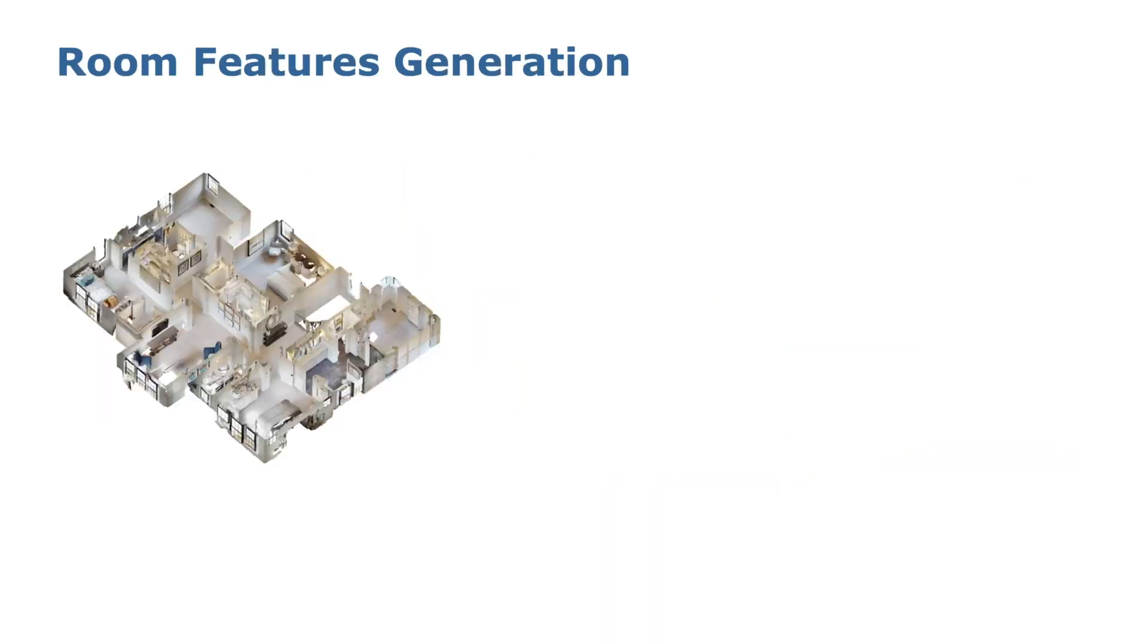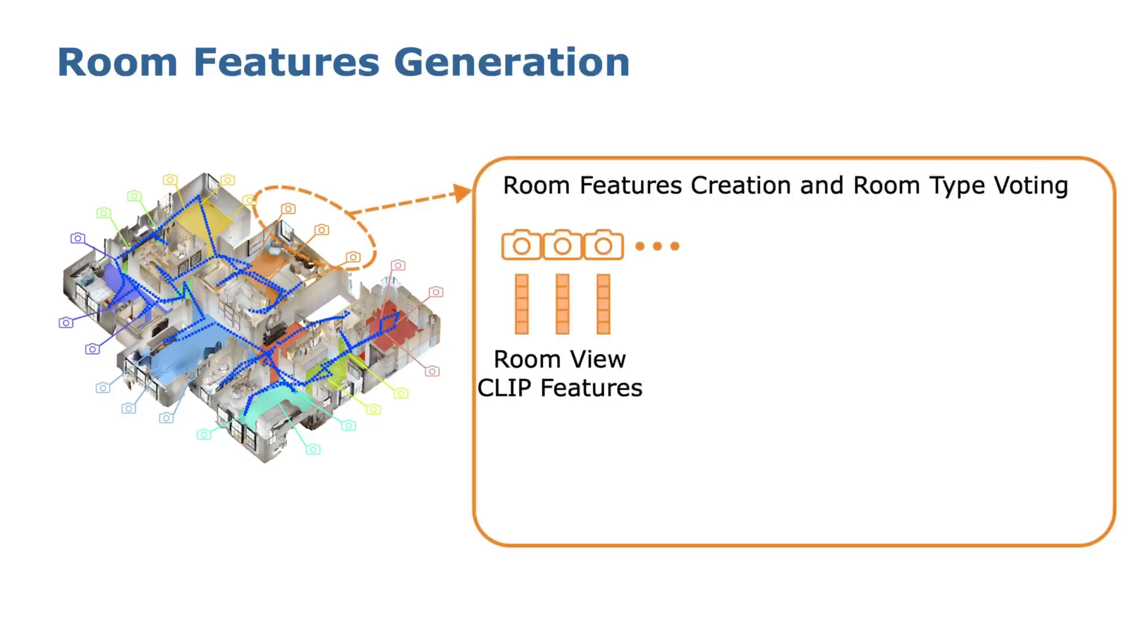In HofSG, we propose a new way to generate the features for each room. Given the odometry and room regions on the floor, we assign camera views to their corresponding rooms and compute their CLIP features. Later, we apply k-means clustering to obtain k-representative features for each room.